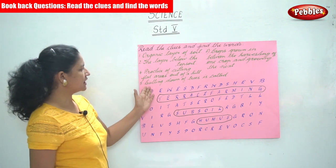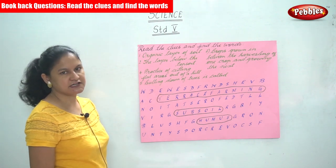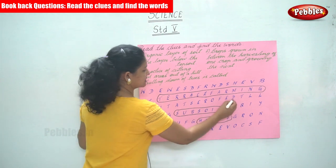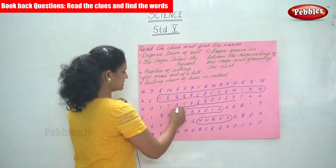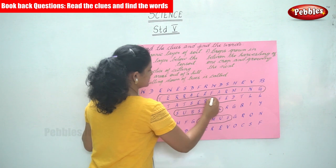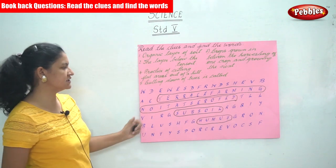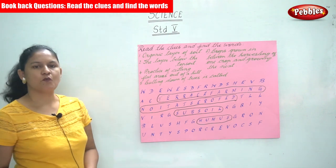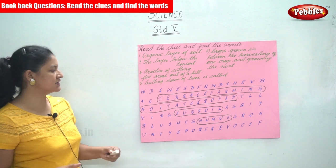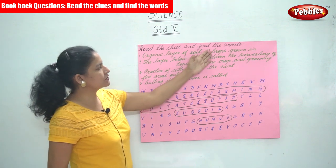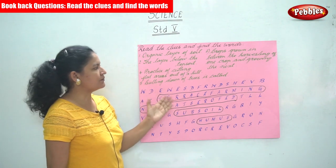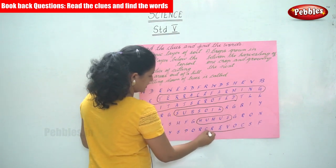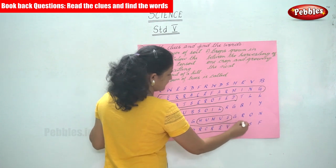The next clue is: cutting down of trees is called deforestation. D-E-F-O-R-E-S-T-A-T-I-O-N. The next clue is: crops grown in between the harvesting of one crop and growing the next. That is called cover crops. C-O-V-E-R-C-R-O-P-S. We have found the word cover crops.